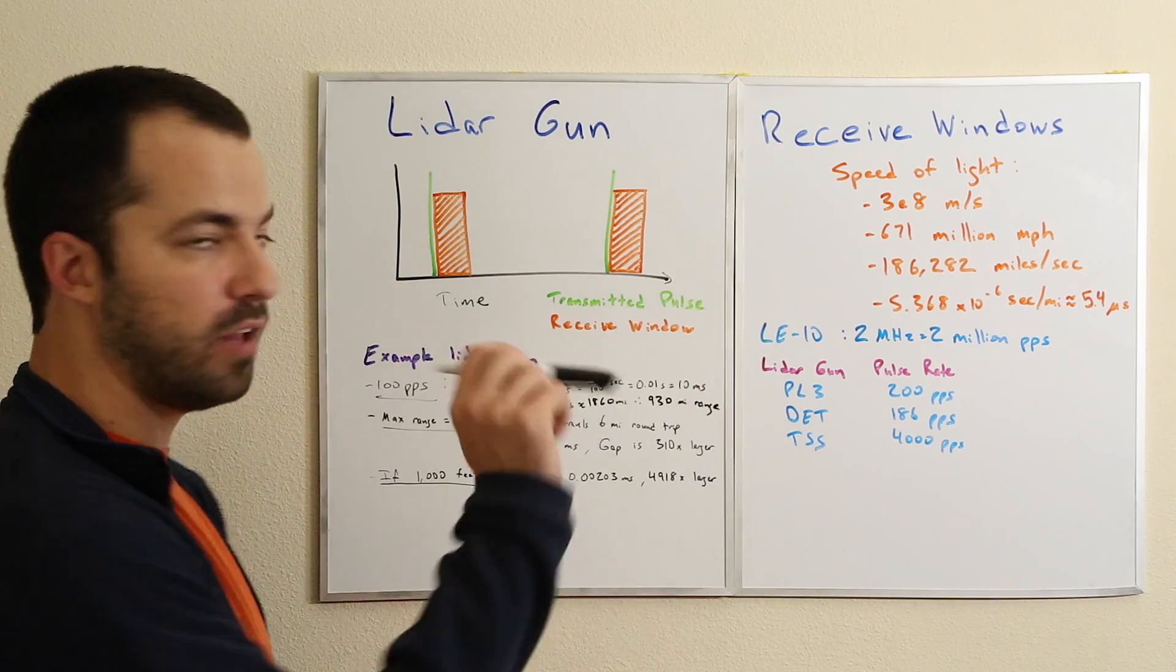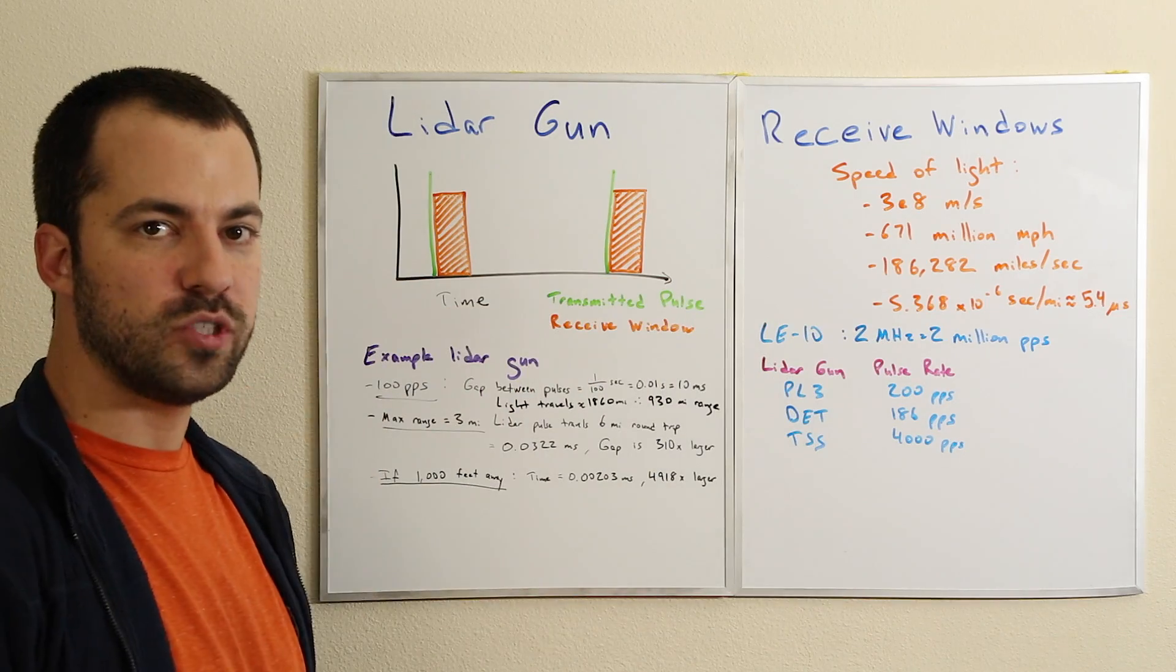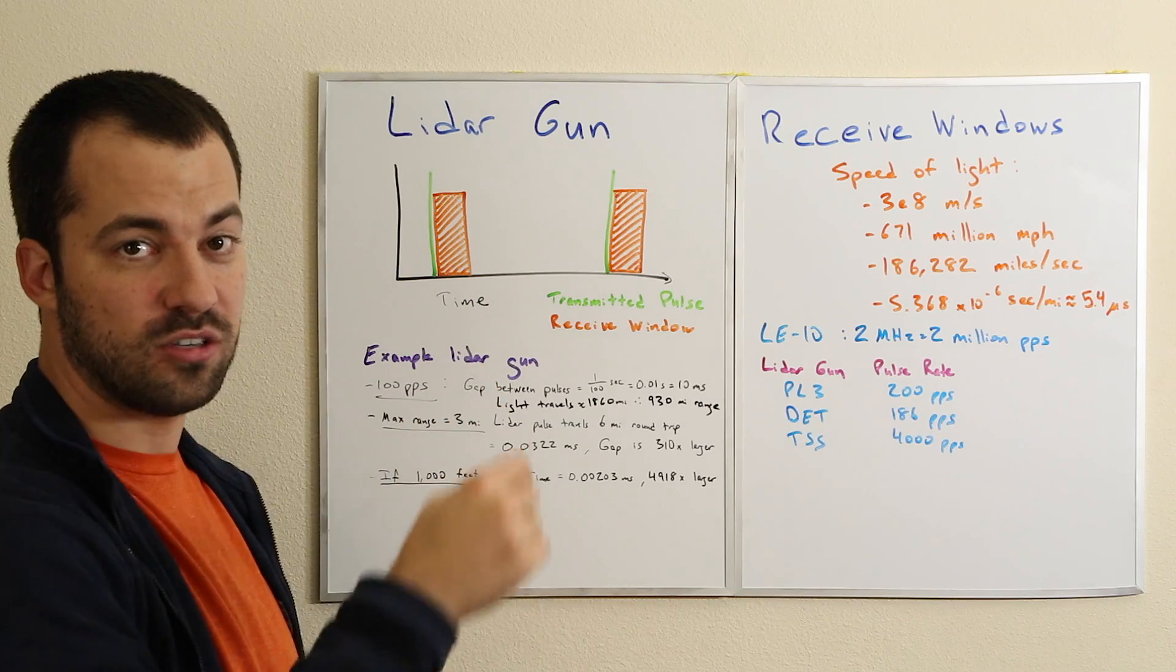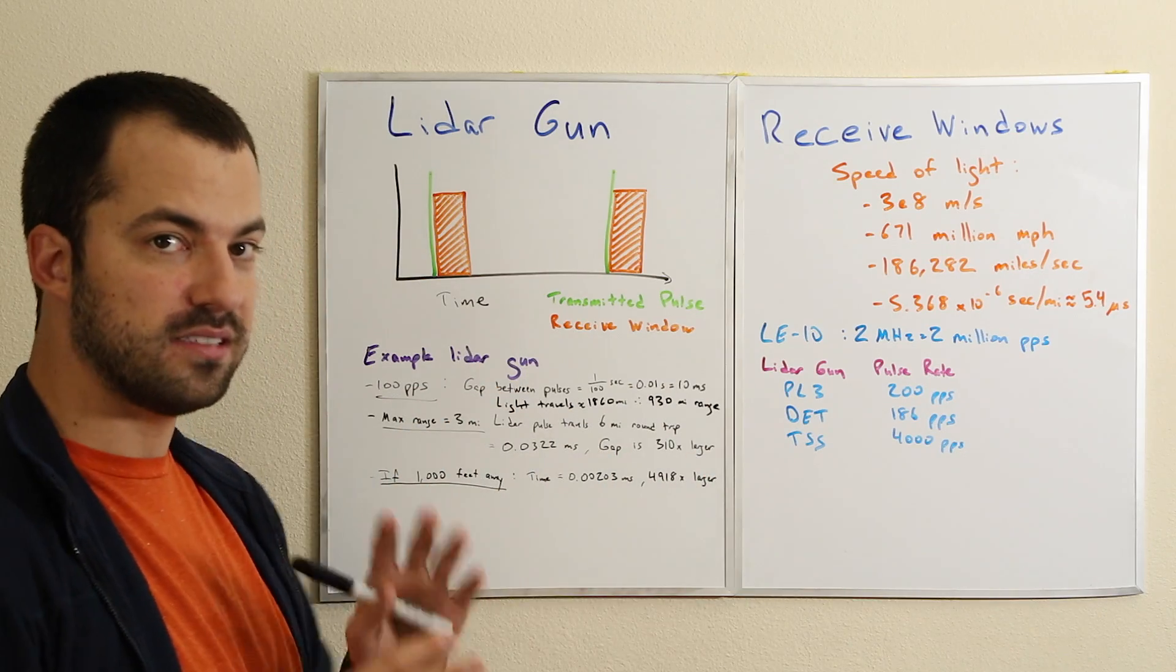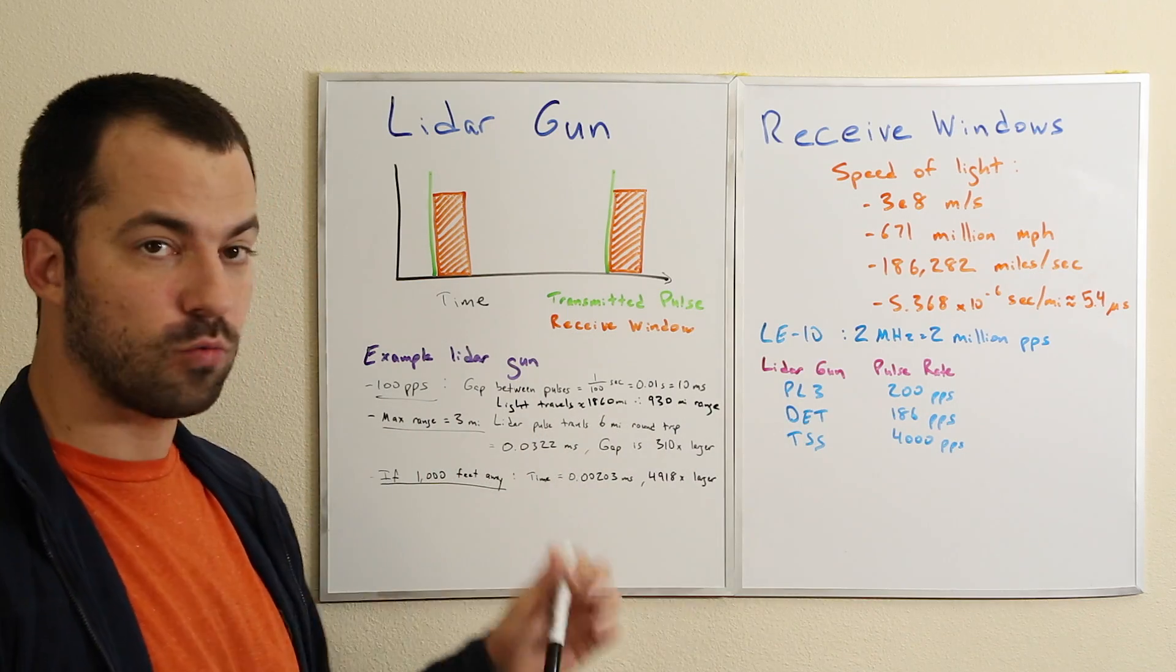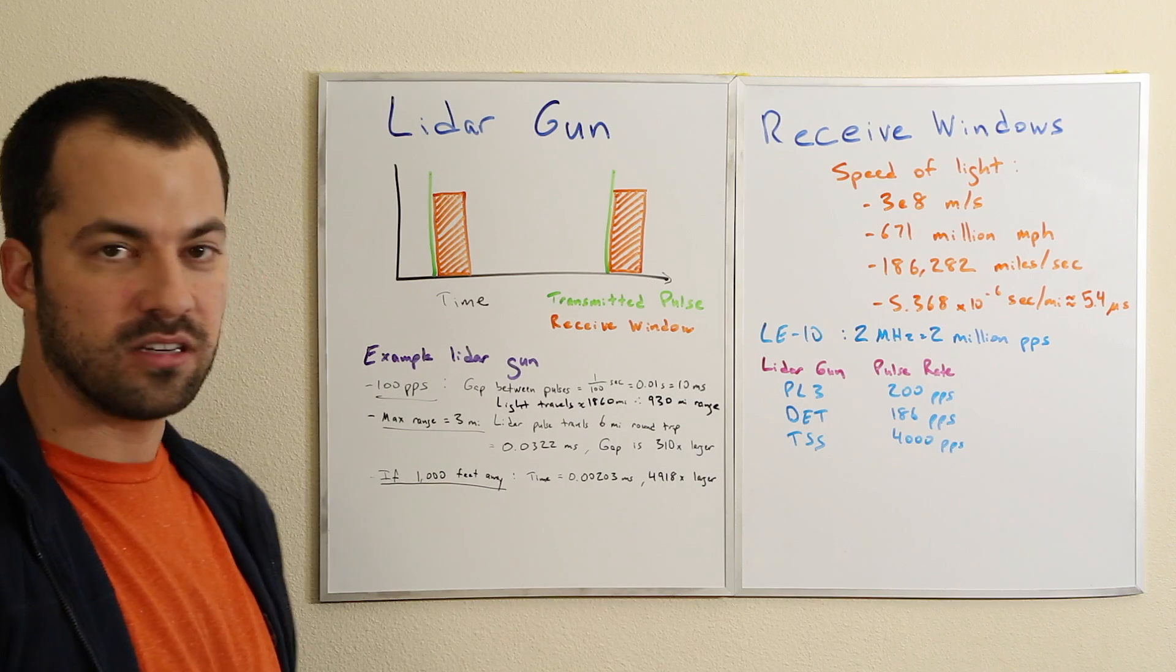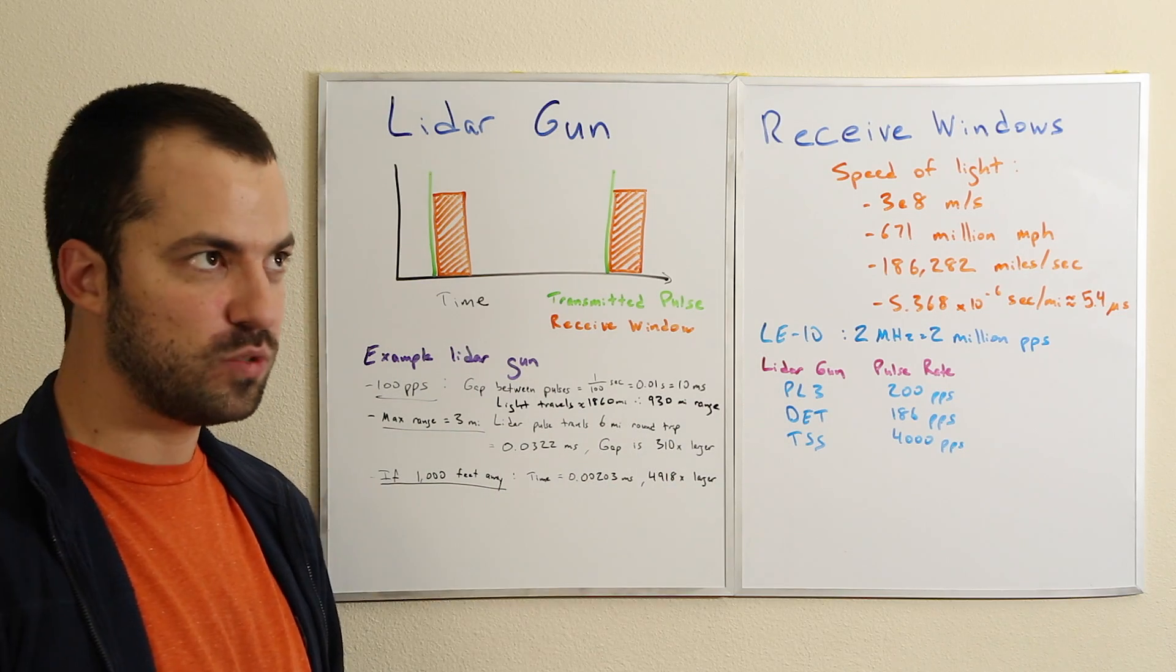A lidar gun is actually looking for a reflection off of a target, so the light has to travel there and back, which means the farthest distance we could clock is only half that because the light travels from here to the target vehicle and back. That would give our maximum theoretical range in an ideal world of 930 miles for this 100 pulse per second gun.